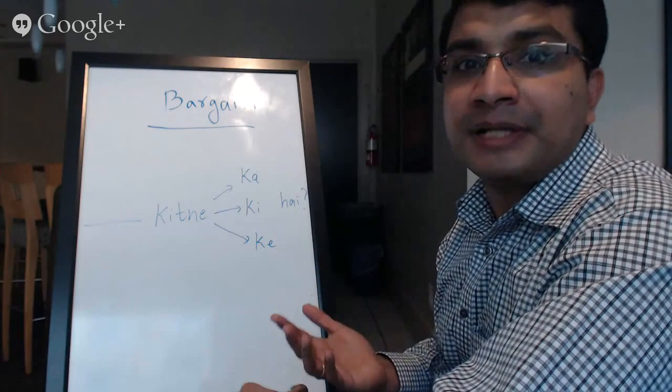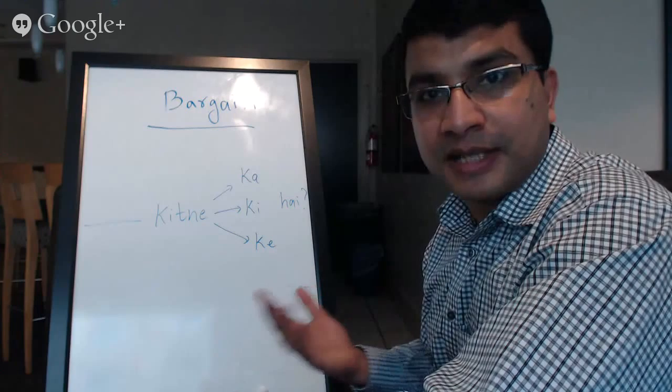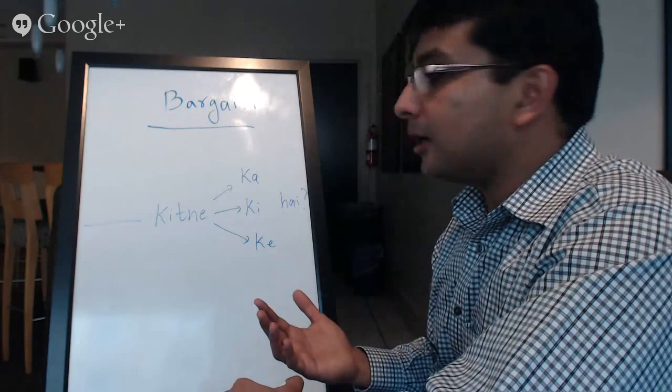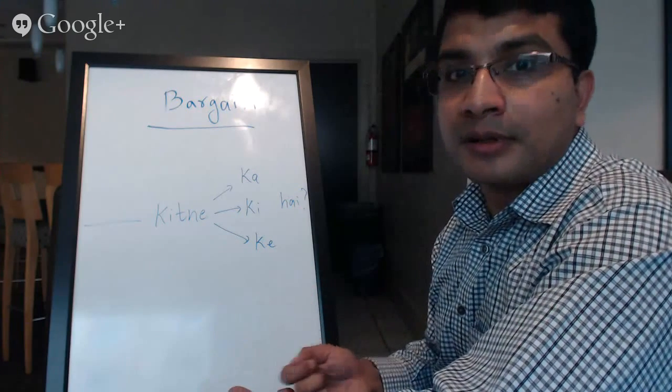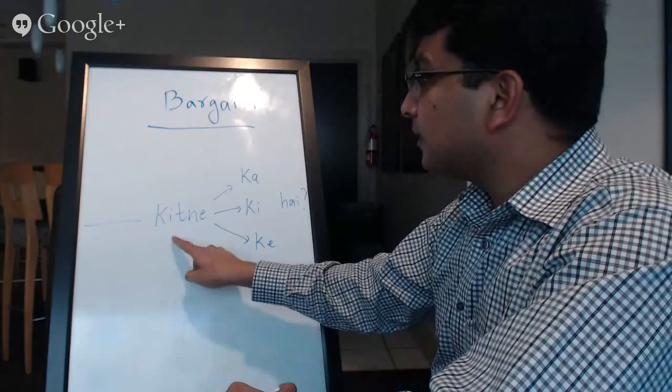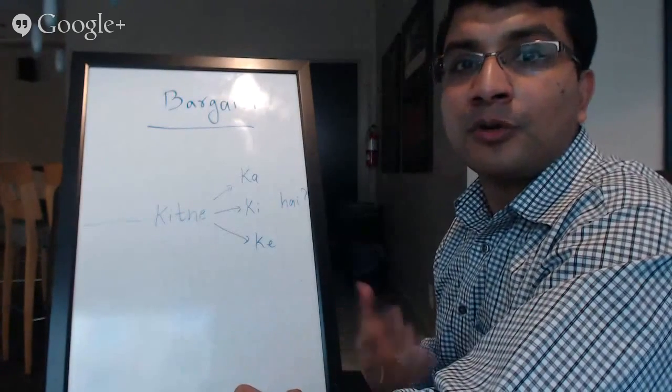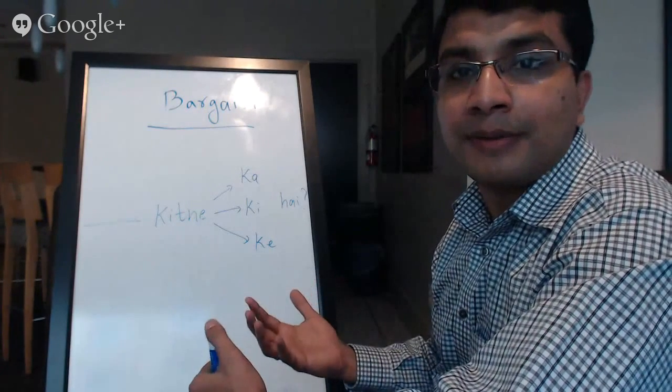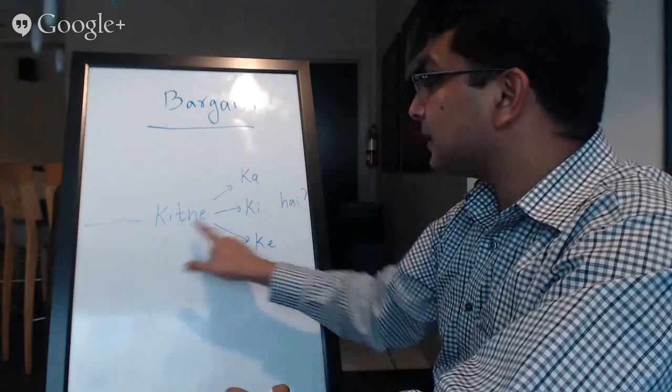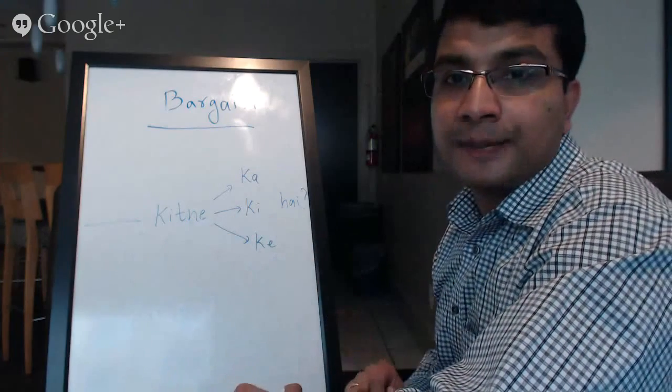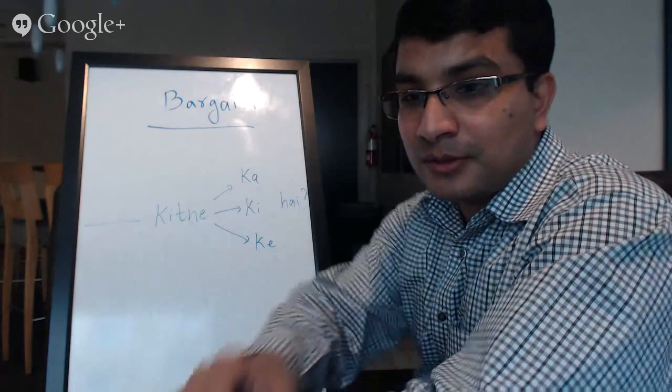And then apple, it's in Hindi, it's same. If you're talking about one apple, an apple kitne ka hai. If you're talking about multiple apples or like a group of apples, apples kitne ke hai.